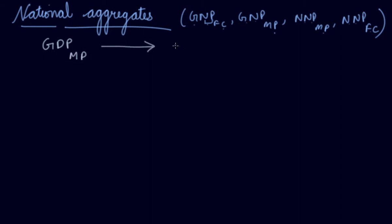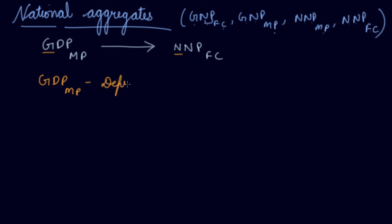You have to go to NNP at FC. What will you do? Number one, from G to N, what you do is subtract the depreciation, or the consumption of fixed capital. So when you subtract GDP at MP minus depreciation (also called consumption of fixed capital), what will you get? You will get NDP at MP. Now you have converted from G to N.